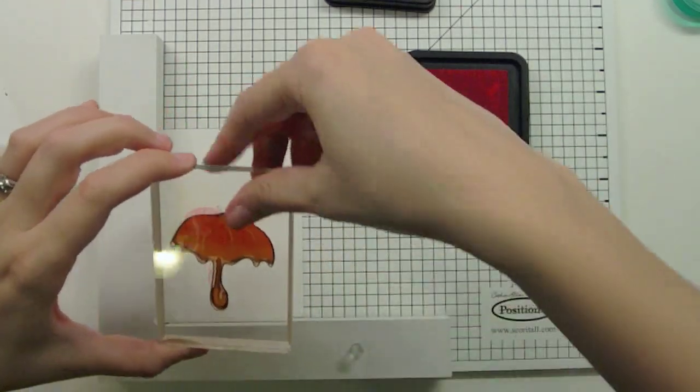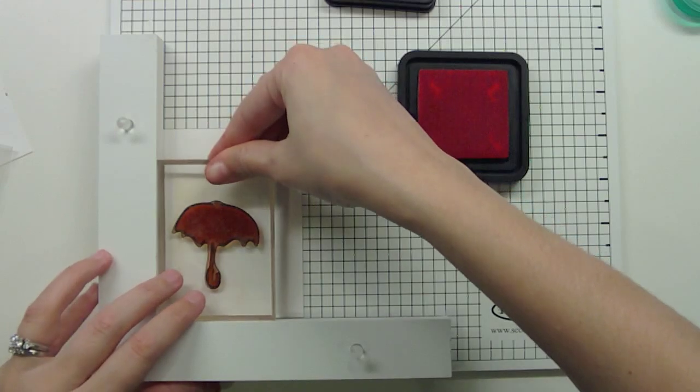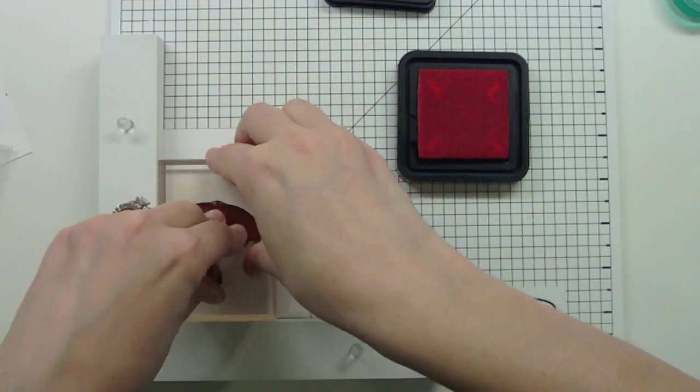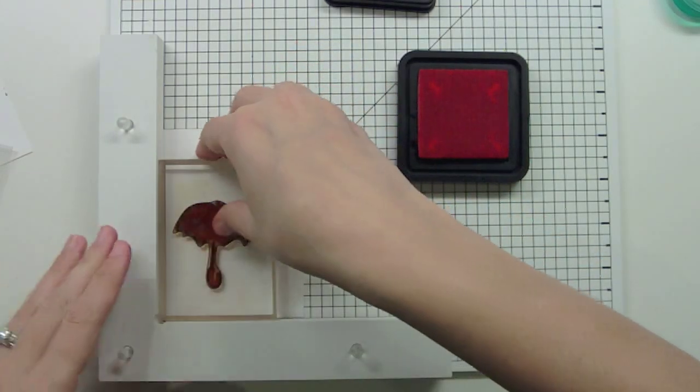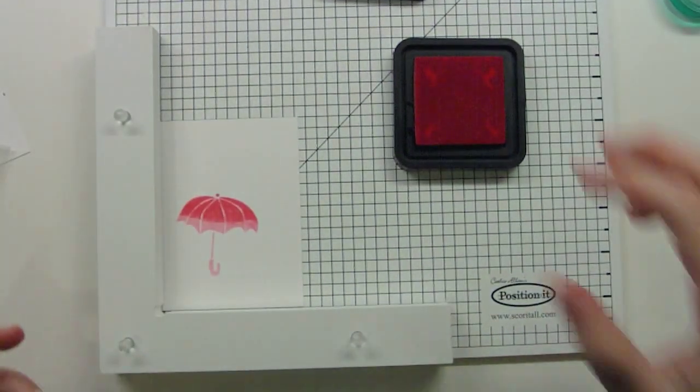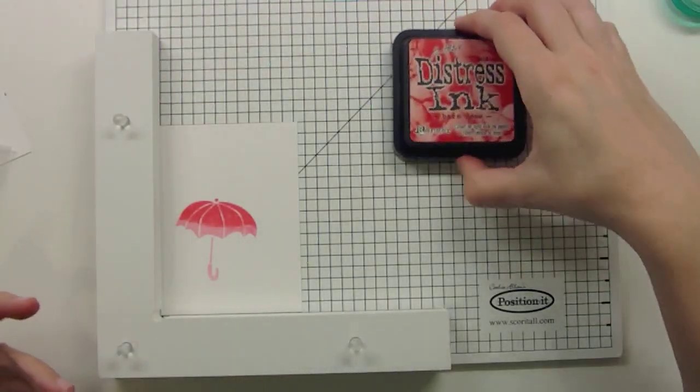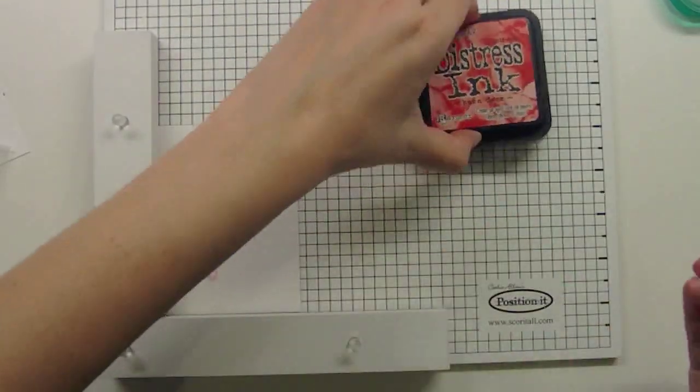And you're going to see now when I stamp down, using the Position It so that it's perfectly aligned, that I'm going to have this layer of darker pink above the light pink, which I think looks really cool. You could even just stop there. But I wanted to continue using the Position It because I think it's so fun that you can just keep going over the same image.